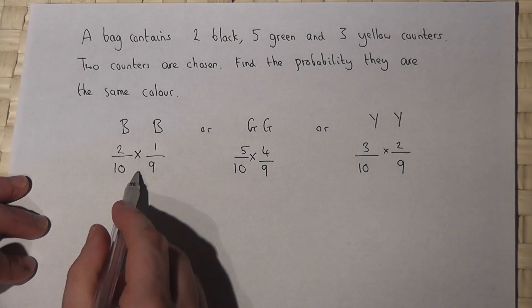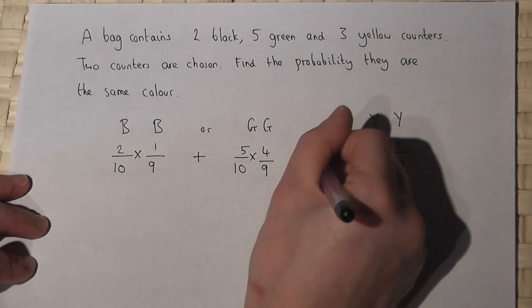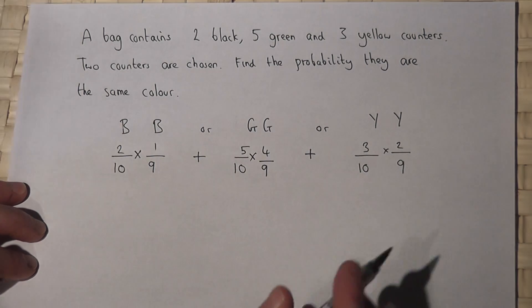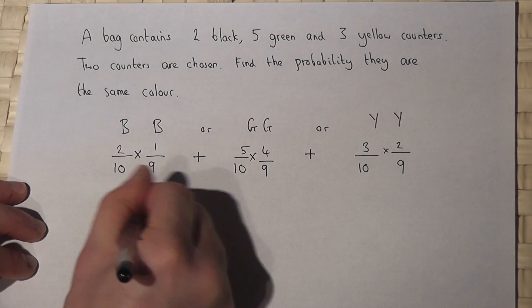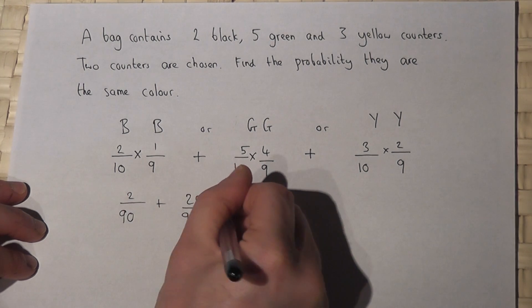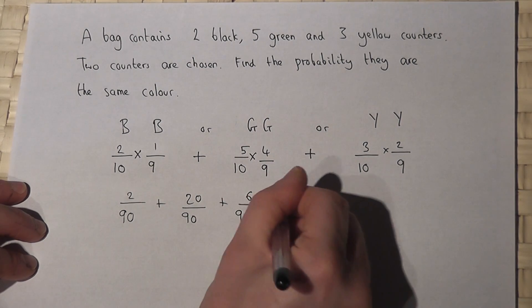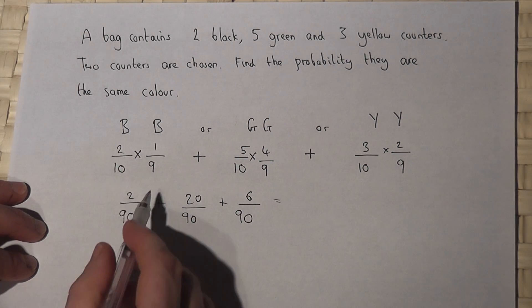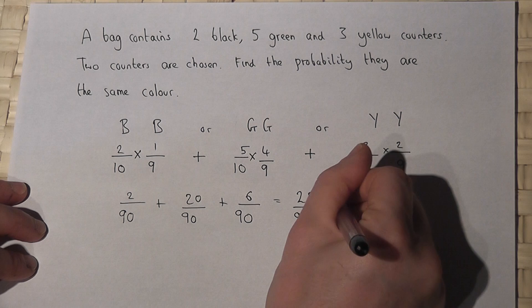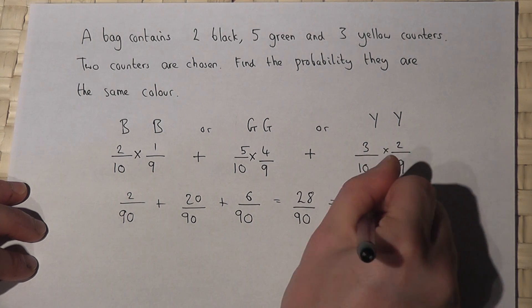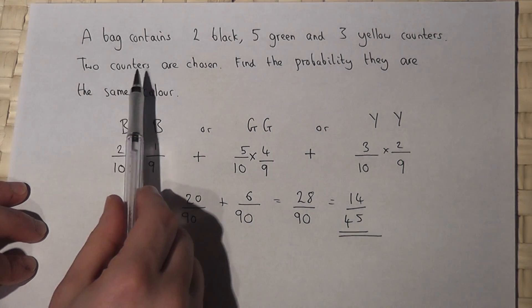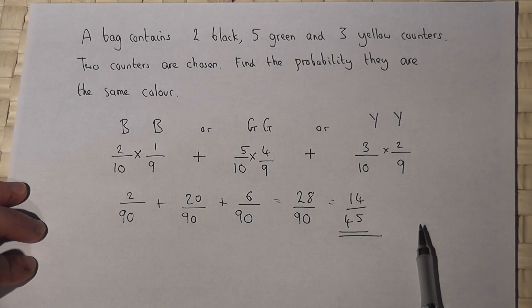So it's this option plus this option plus this option. Now I know this cancelled down, but we'll work it out longhand. So two over ninety plus twenty over ninety plus six over ninety. Again, just times the tops and the bottoms. Two plus twenty plus six is twenty-eight over ninety. Which is fourteen over forty-five. The chance that the two counters chosen are the same colour is fourteen out of forty-five.